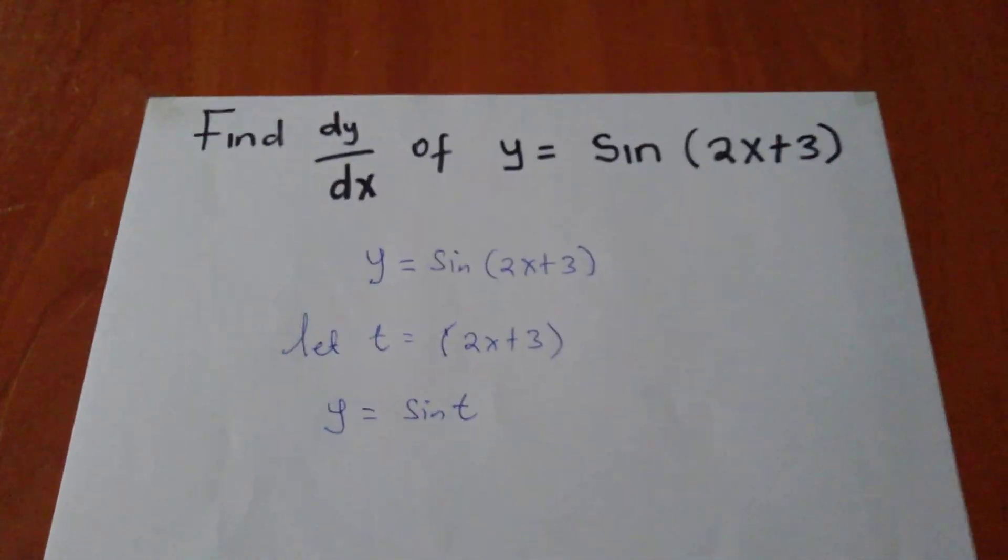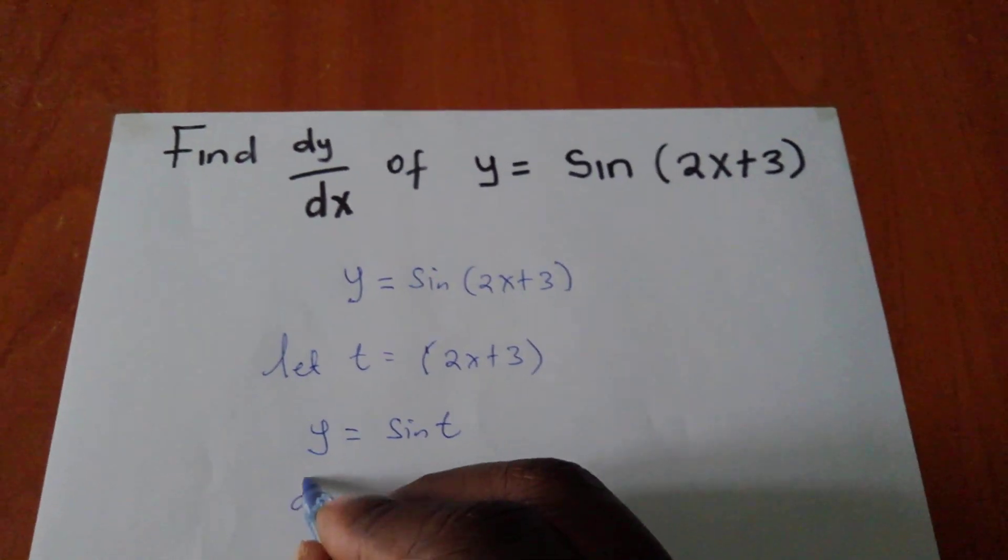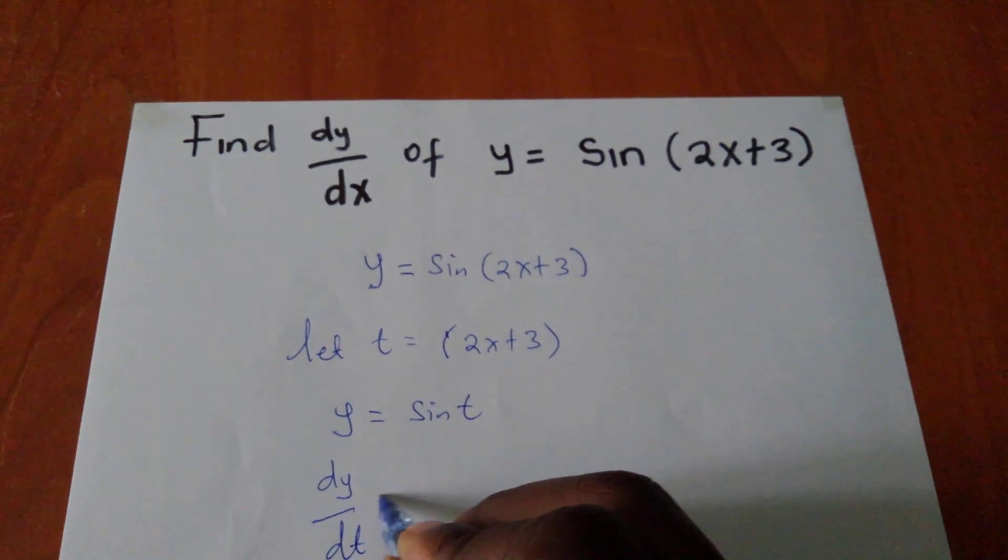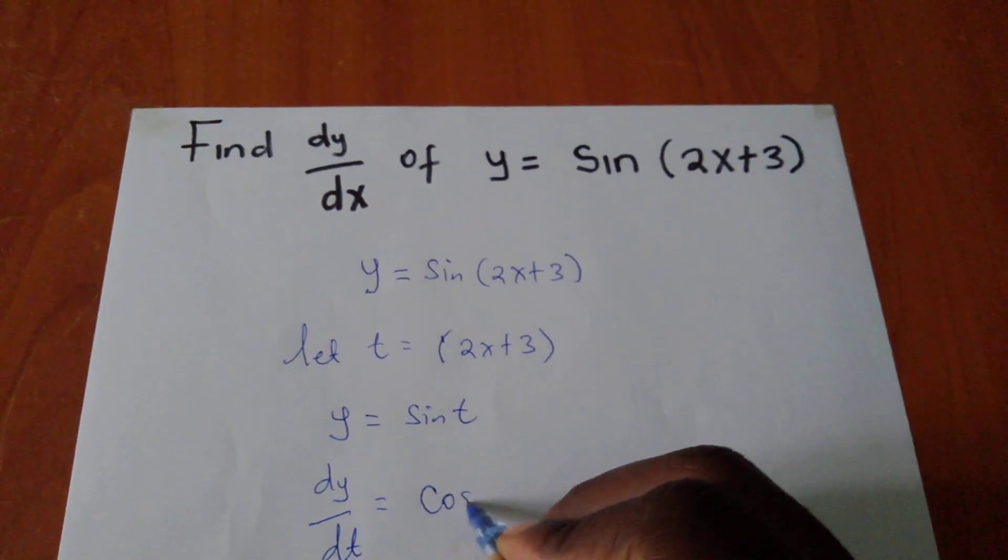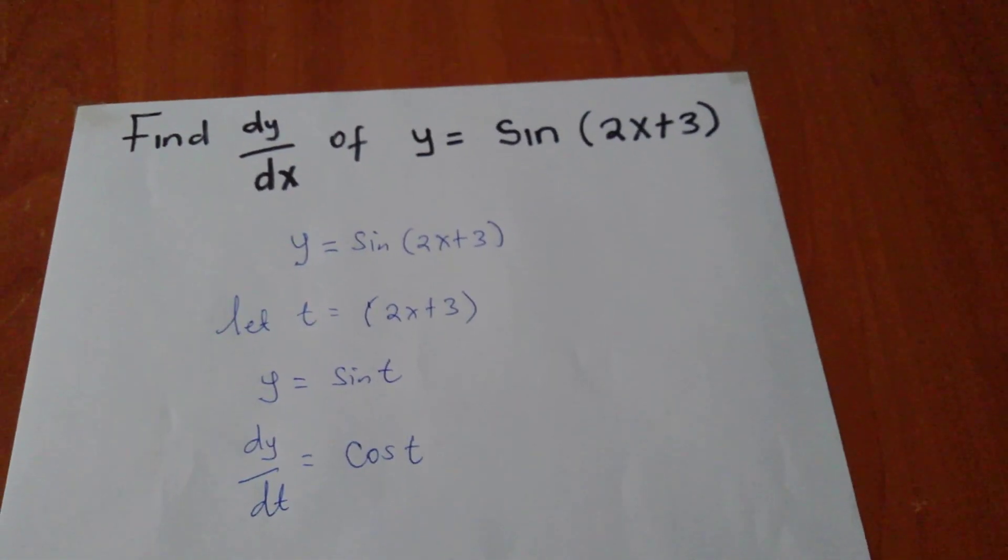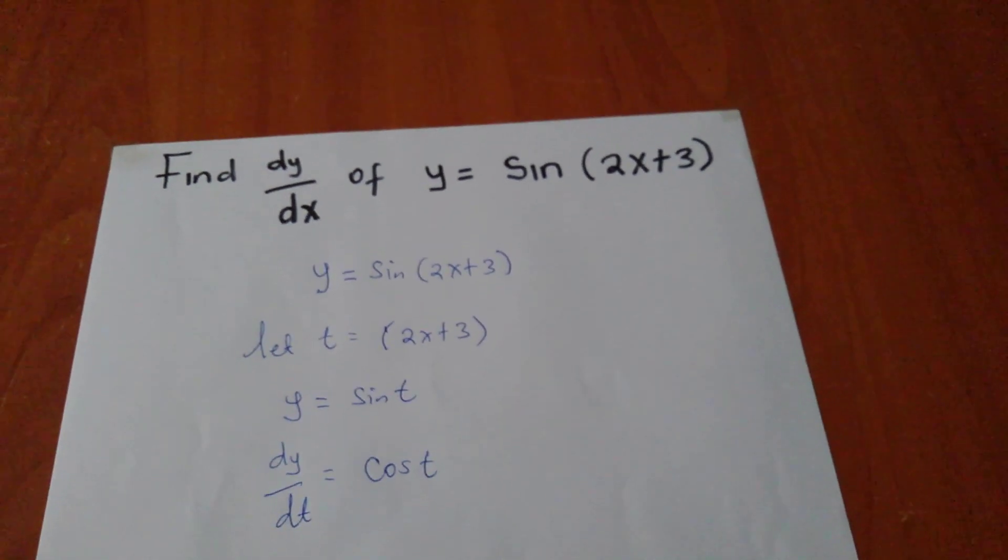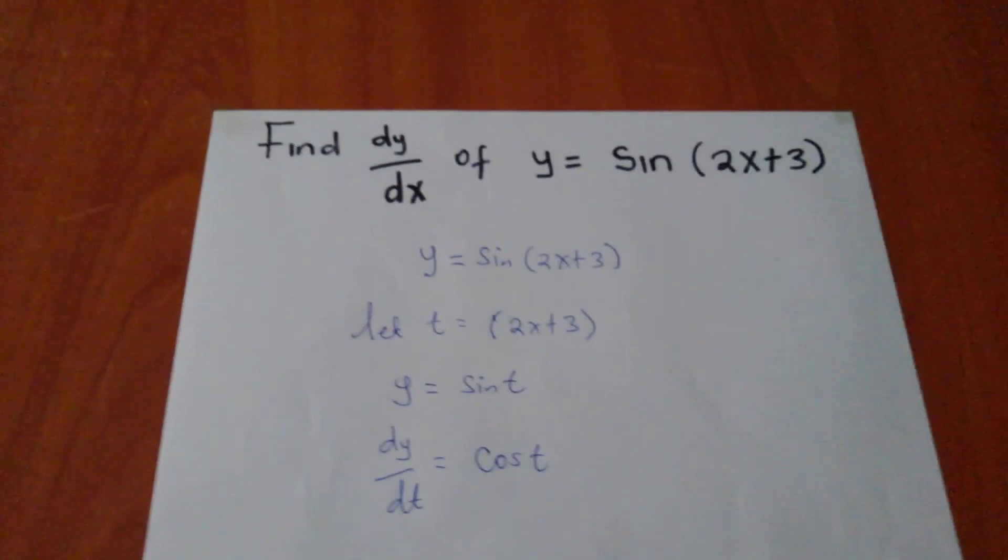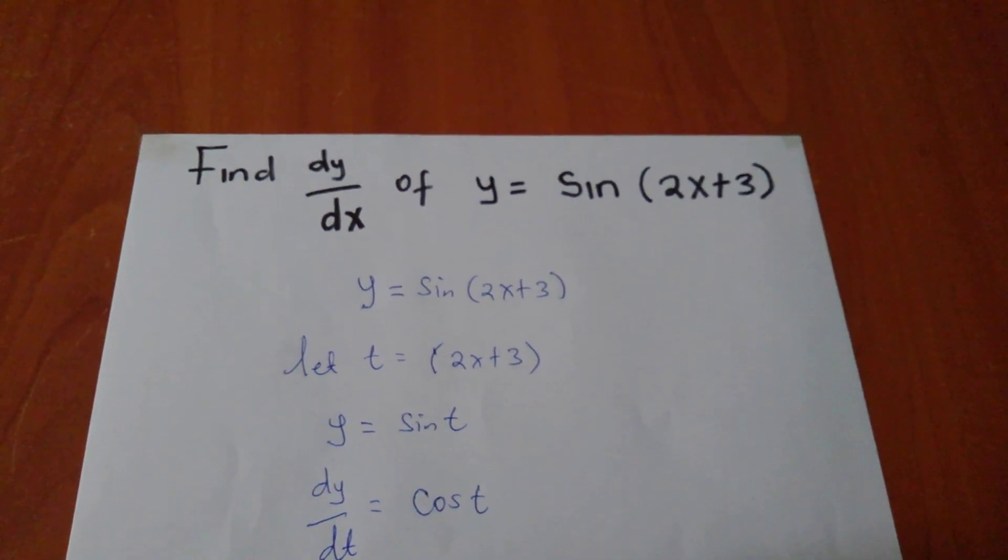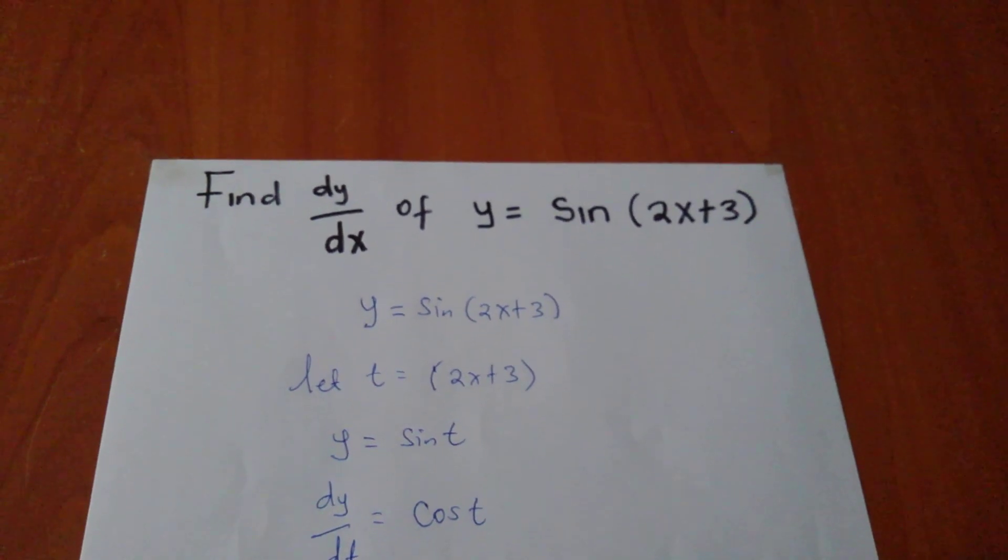Now from here I will need to find also my dy/dt, which will be cos t. I think you agree up to that level. So also since I have t equals to 2x plus 3, my dt/dx will give me 2 if I differentiate this expression.